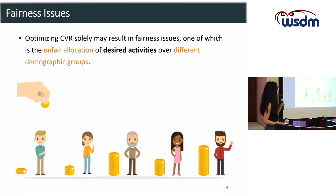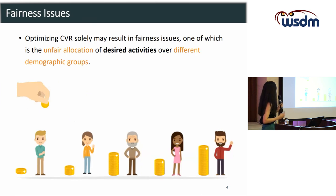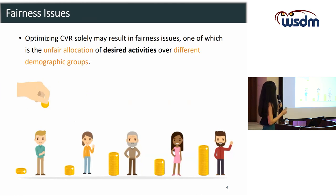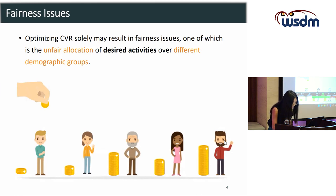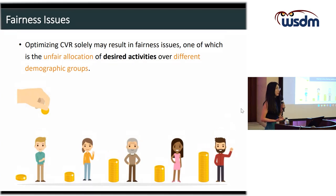One fairness issue is the unfair allocation of the desired activities over different demographic groups. The majority group may dominate the recommendation and thereby hold the majority of the resources, while minority groups may be underrepresented or even ignored by the recommender systems.